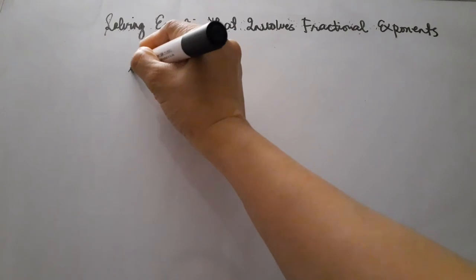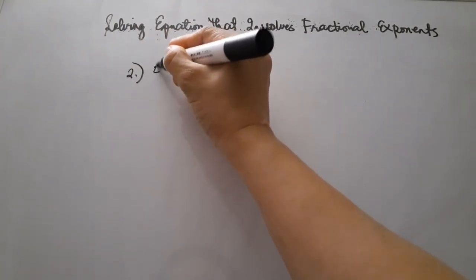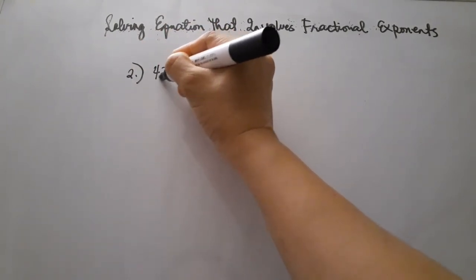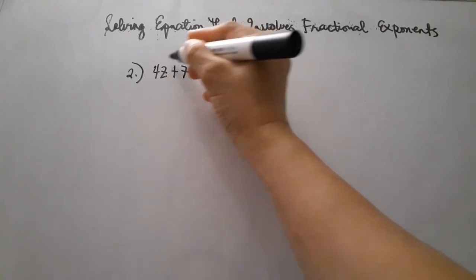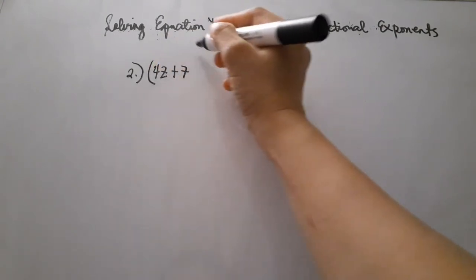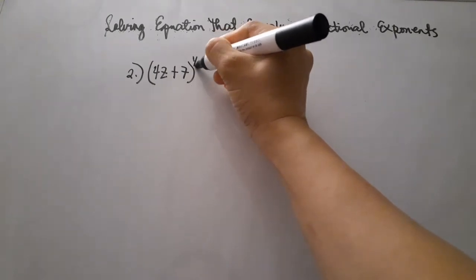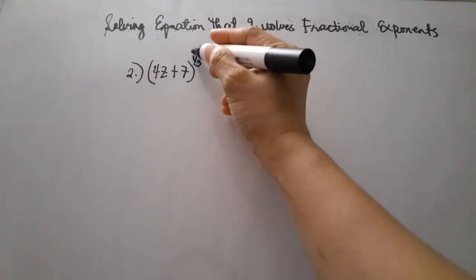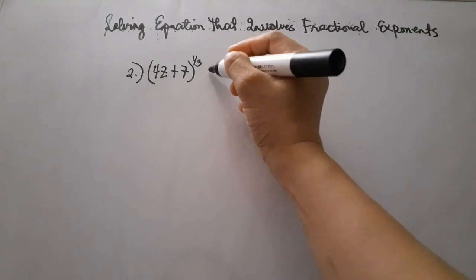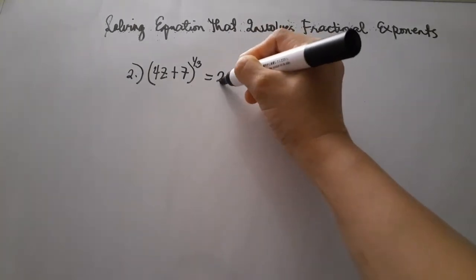Let's go to example number 2. This one is easier. The equation is: 4z plus 7, raised to the power of 1 third, is equal to 2.